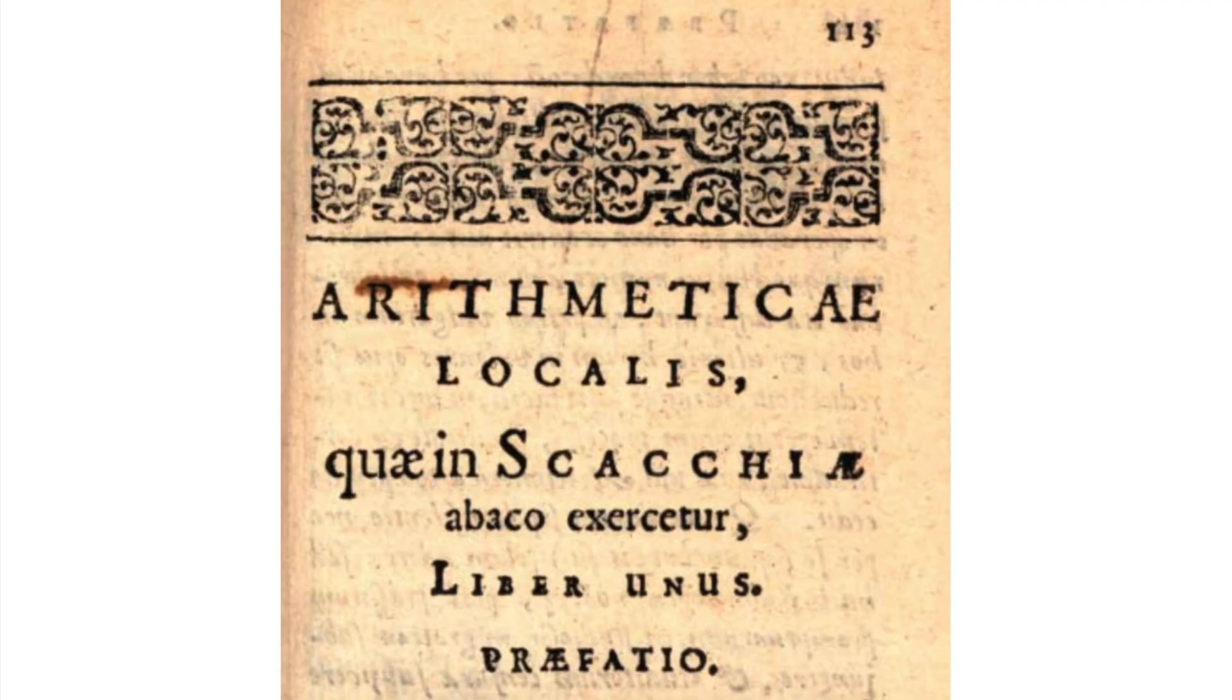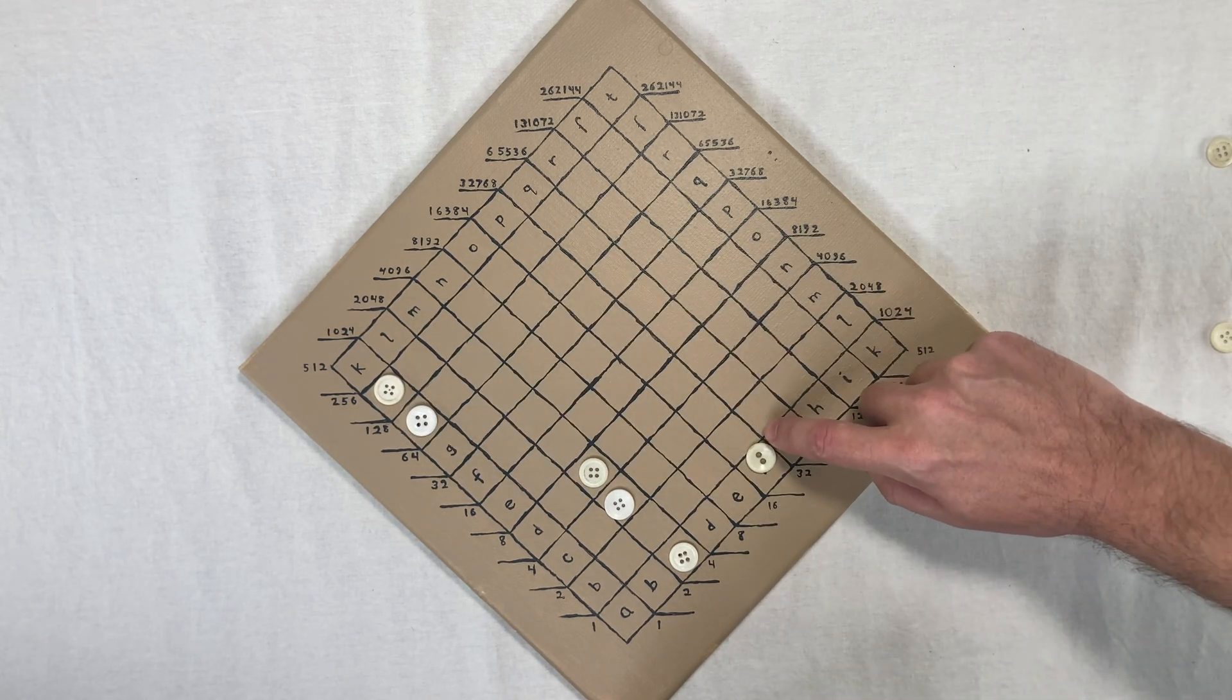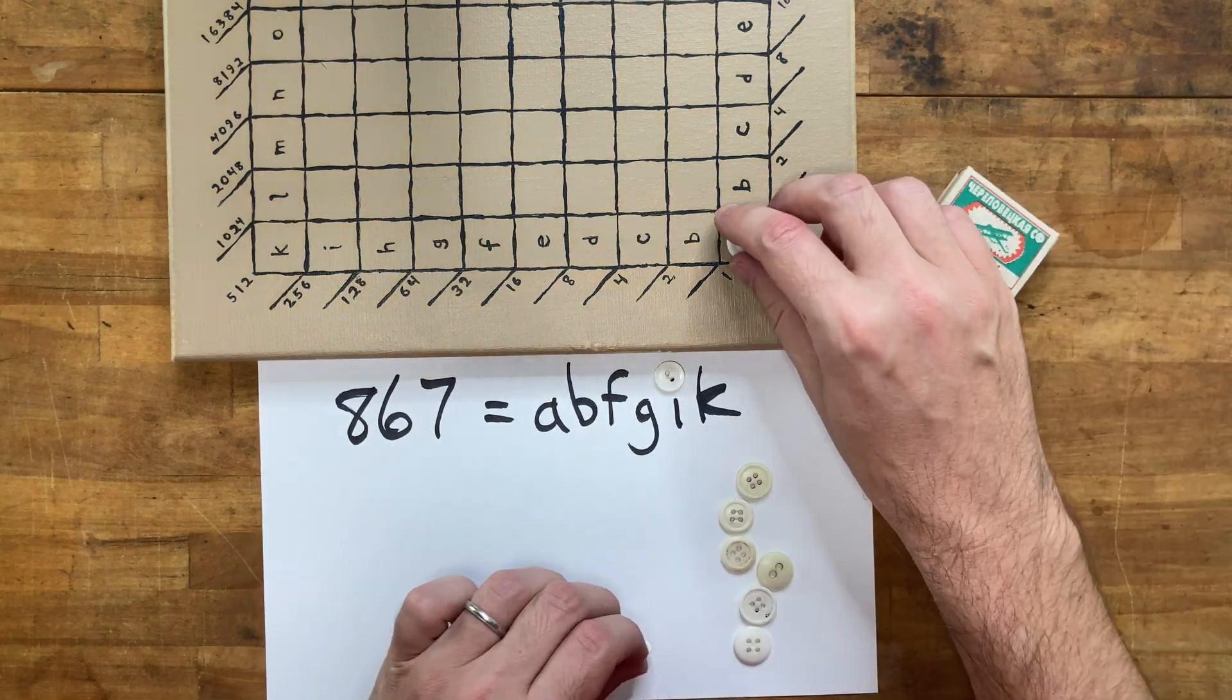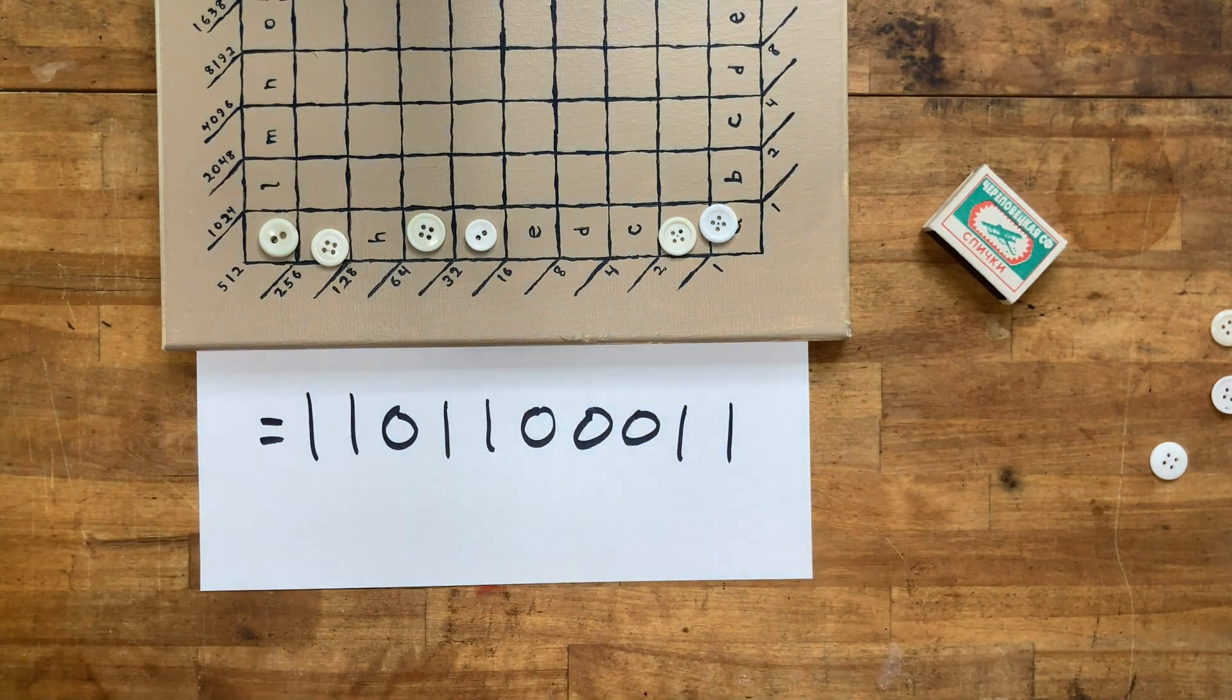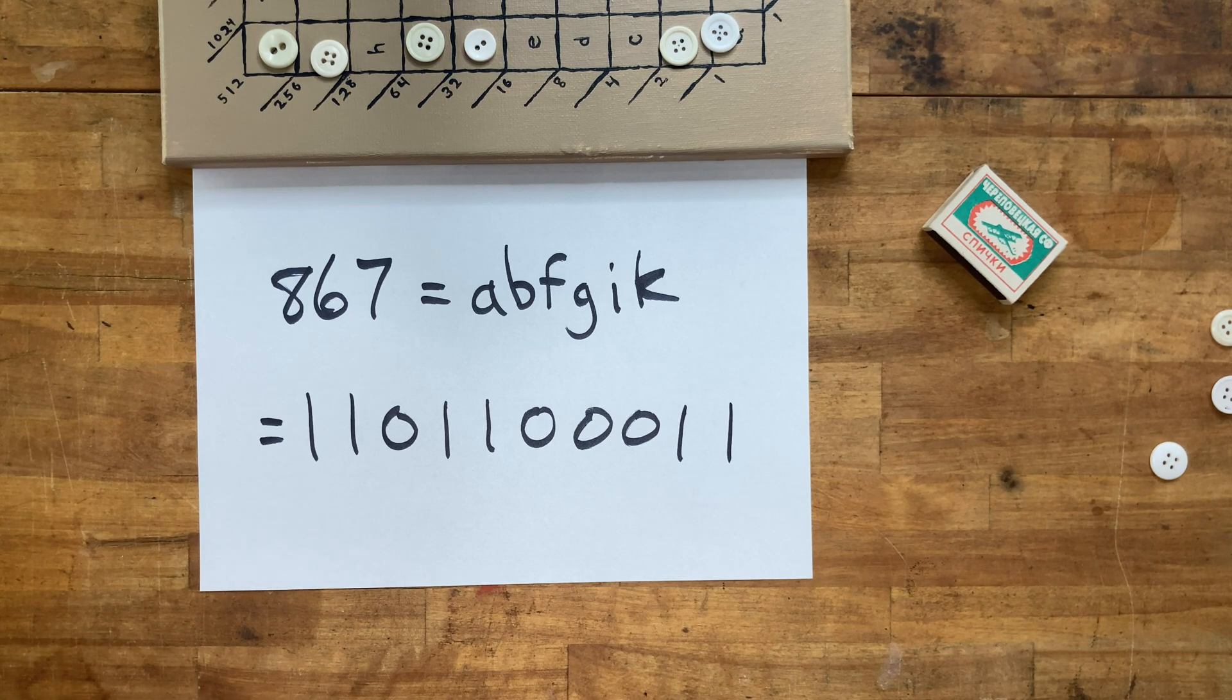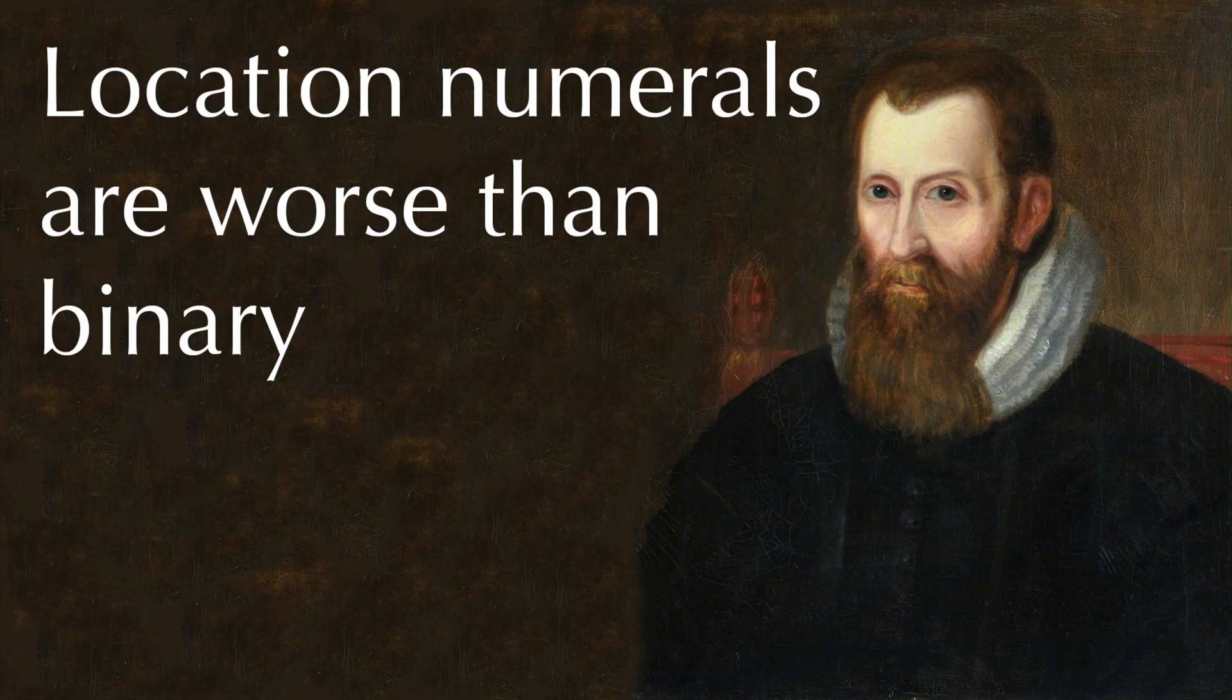Obviously, Napier's location numerals didn't take the world by storm. Today, basically, nobody's ever heard of them, even among mathematicians. Probably because they're a more primitive version of a modern system that's basically better in every way. Binary numbers. Like, the number 867 in location numbers looks like this. A, B, F, G, I, K. It looks like this on the board. And when you see it on the board, this immediately tells me the binary form of my number is this. It's just writing ones in the digits where the markers go and zeros in the empty spots. So the abbreviated location numerals are really just the same as modern binary. And when you compare the two systems, Napier really comes up short. I got three reasons why Napier's location numerals are worse than binary.